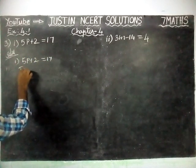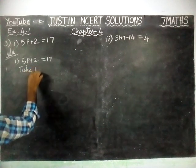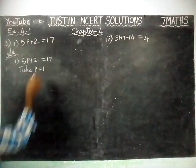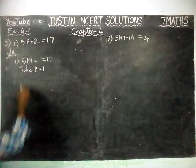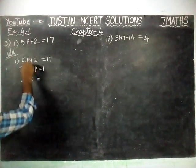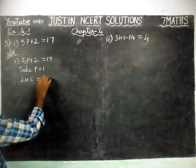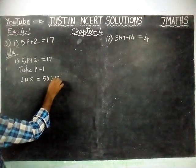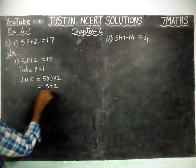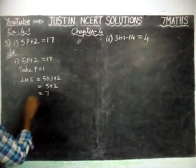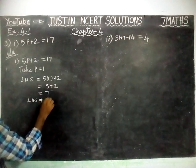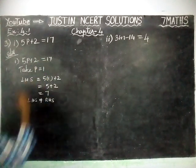We are going to substitute. Take P is equal to 1. Now, taking the left hand side, LHS is equal to 5P plus 2. So, 5 into 1 plus 2 is equal to 5 plus 2 is equal to 7. Here, LHS is not equal to RHS, because RHS value is equal to 17.